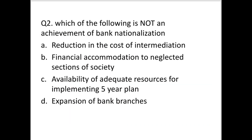Practice question: Which of the following is not an achievement of bank nationalization? 'Reduction in cost of intermediation' is the wrong answer — meaning it is not an achievement — because the cost of intermediation actually increased rather than decreased. Financial accommodation to neglected sections of society is one of the achievements.